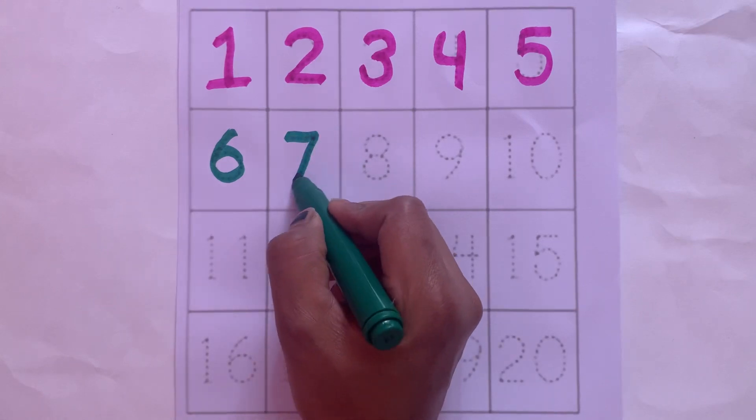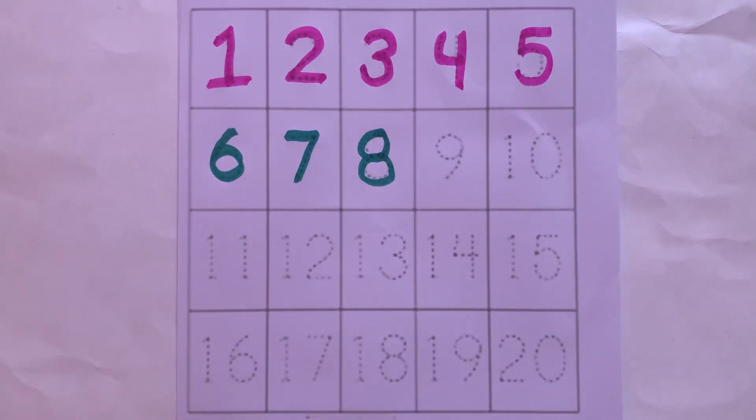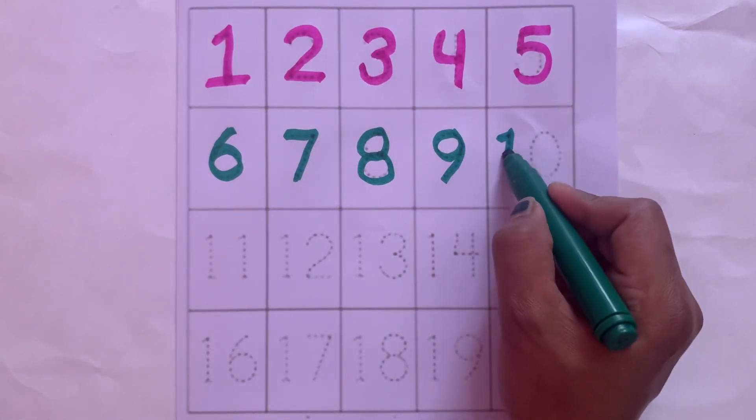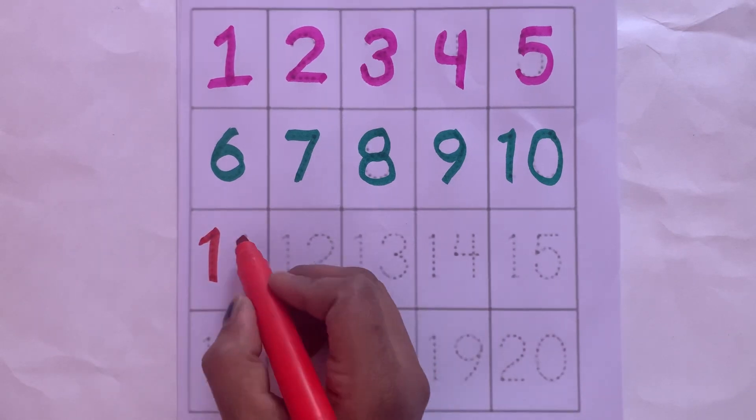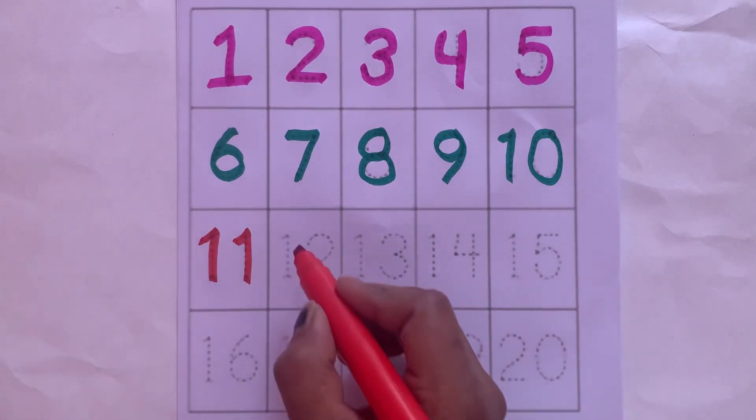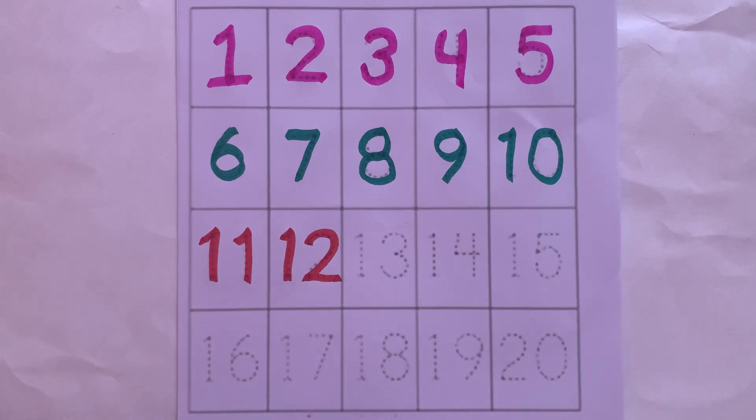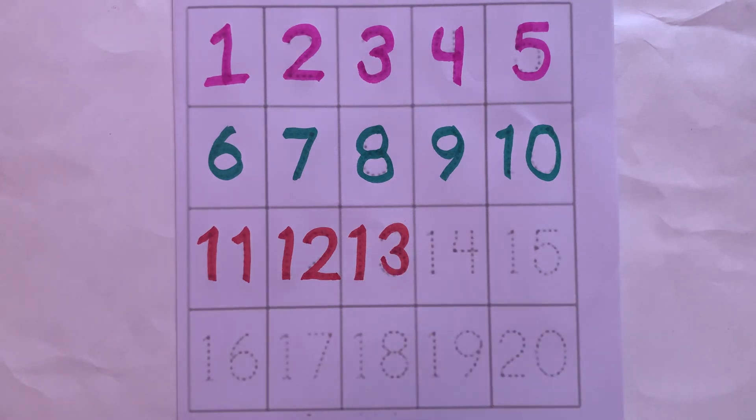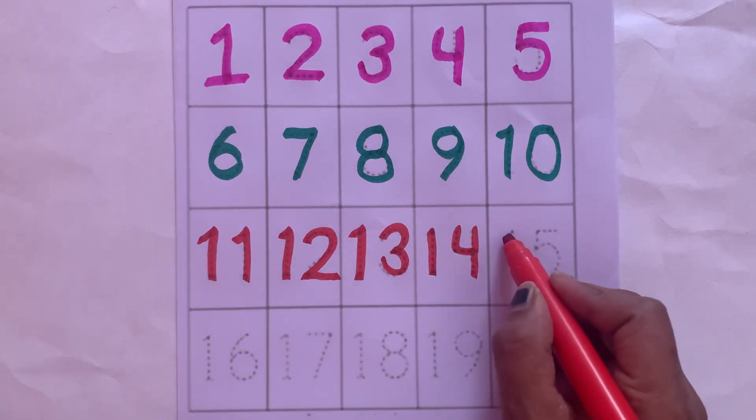Six, seven, eight, nine, one zero - ten, one one - eleven, one two - twelve, one three - thirteen, one four - fourteen.